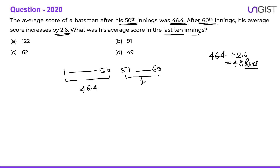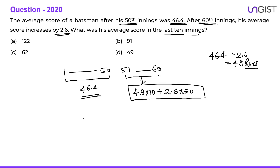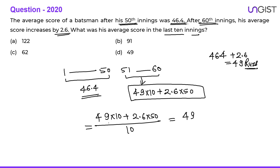In his last 10 innings he must have scored 49 runs for those 10 innings, plus enough extra to contribute 2.6 to the previous 50 innings. So the total of the last 10 innings divided by 10 gives the average. This is 49 plus (2.6 into 50) divided by 10, which equals 49 plus 13, that is 62 runs. Option C is the correct choice.